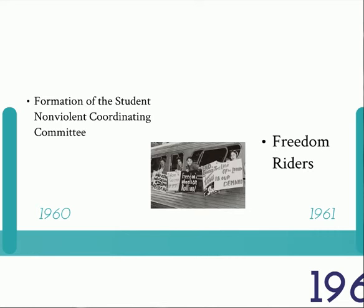In May of 1961, students began taking bus trips through the South to test out new laws that prohibit segregation in interstate bus and railroad stations. These groups were called Freedom Riders and were attacked by angry mobs along the way.